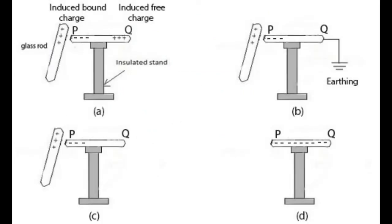Now this diagram is showing you the basic explanation of induction. A glass rod carrying a positive charge is brought near rod PQ. At the near end, we can see the opposite charge is induced — this is called the induced bound charge because it cannot move until the glass rod is removed. At the far end Q, the induced free charge is opposite in nature. If we connect point Q to the earth, this excess free induced charge flows to the earth, and the rod PQ will have the negative charge at point P. If we then remove the glass rod, this negative charge at P spreads through the rod PQ — and this shows how we can charge an object by the process of induction.